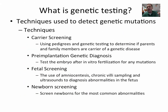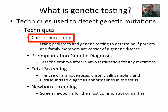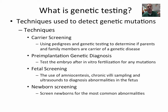How can we detect these genetic mutations? The first method is carrier screening — looking at a family history through pedigrees or other genetic tests to find out which parent is a carrier. If both parents are carriers, in the case of a recessive disorder, that creates a greater chance for the child to have the disease.